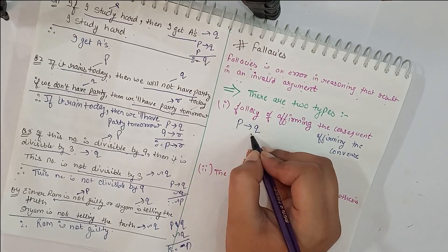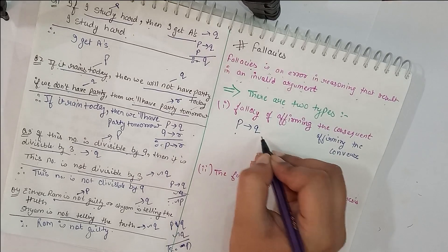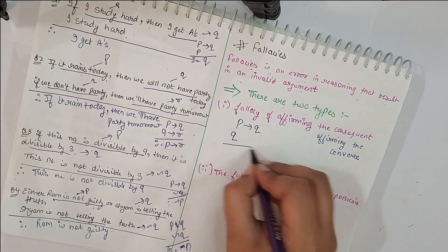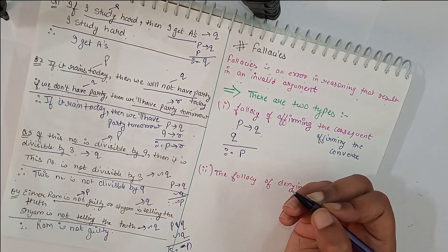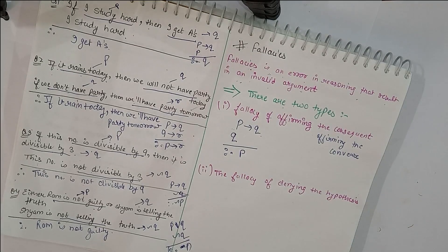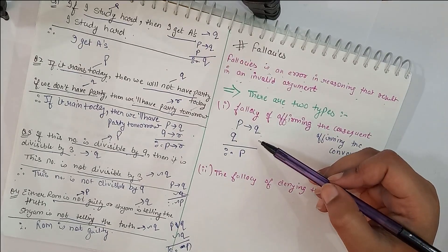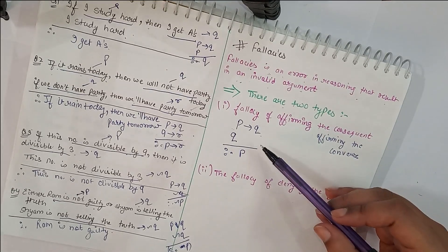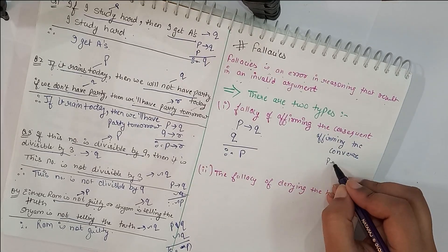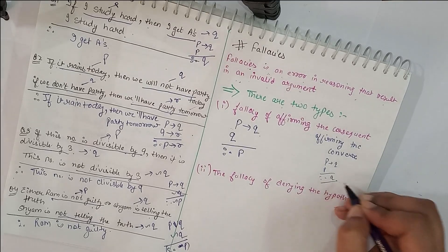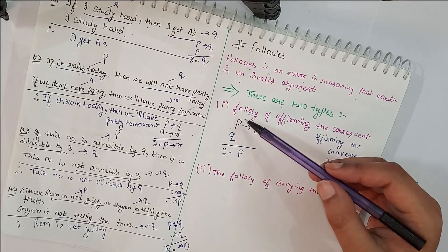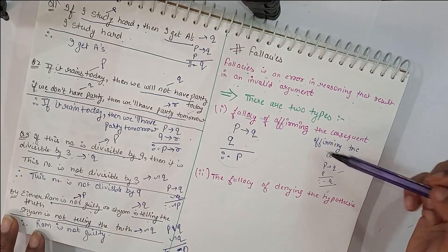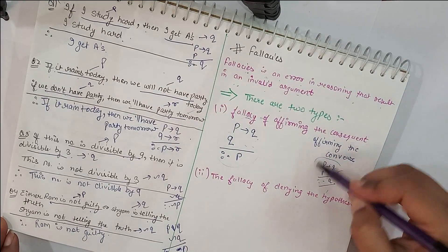The first is called the Fallacy of Affirming the Consequent, also known as affirming the converse. It says: if P implies Q is true, and Q is true, then conclude P. This looks very similar to Modus Ponens, which says P implies Q and P gives conclusion Q — but this is a fallacy, meaning it is an error. Do not confuse it with Modus Ponens.